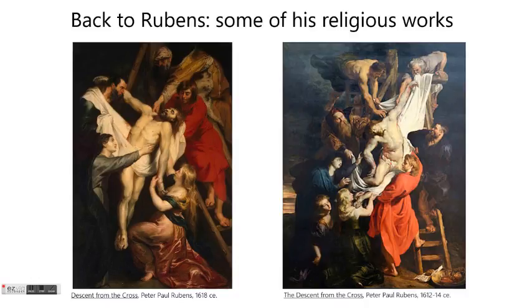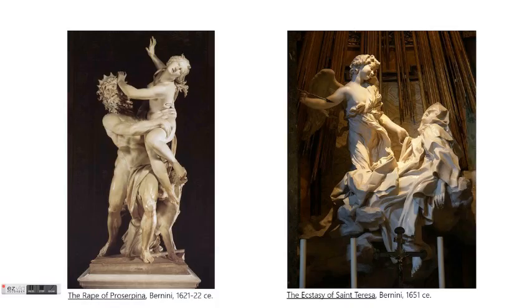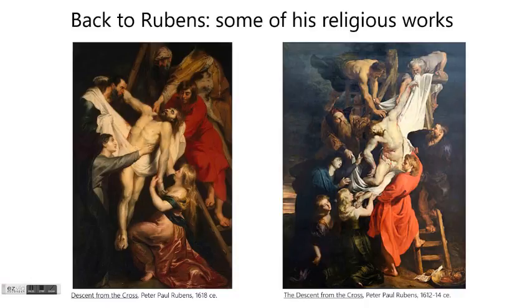Going back to the two descents from the cross, there are a couple of things to say about what Rubens represents in terms of the Baroque. At the beginning we talked about how Baroque art is dramatic — we see that in Bernini as well, probably most notably the Ecstasy of Saint Teresa, which really embodies that idea of sculpture, architecture, and painting being dramatic. We also see an emphasis on contrast, most notably strong value contrast coming straight out of the influence of Caravaggio — contrasting the languorous, lifeless body of Christ versus the straining of the disciples trying to hold him up.